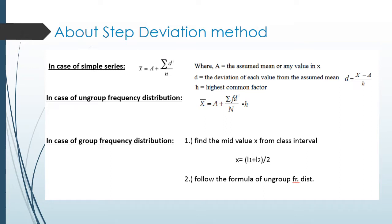The highest common factor is denoted as h. We have three categories of formula. In the case of a simple series, x-bar equals capital A plus sigma d-dash divided by n. Comparing this with the assumed mean method, the only new term is d-dash instead of d. So d-dash equals x minus A divided by h, where h is the highest common factor.